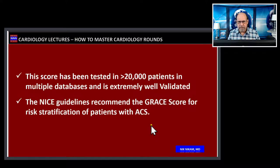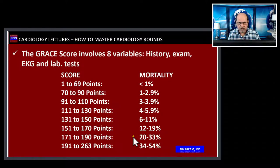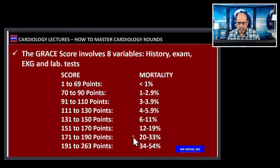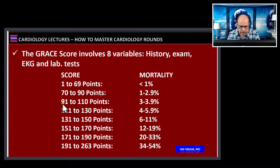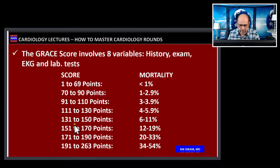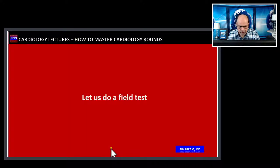Based on these points, when a patient arrives, we enter their data into an app or website which automatically provides the total points and estimated risk. If the score is between 0 and 69, mortality is less than 1%. STEMI patients typically fall between 91 and 130 points, corresponding to 3–5.9% mortality. Acute coronary syndrome patients with scores between 130 and 150 carry 6–11% mortality, with risk increasing further at higher point totals.